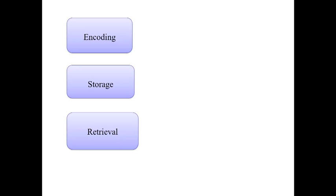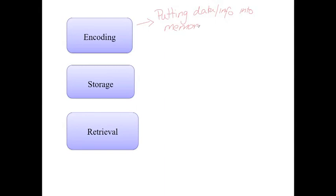We have this idea of encoding, which we looked at before. Encoding basically means putting information into memory — if we think of information as data, it has to be stored in a particular way, and it's not always the same. The second process is storage: once the information is there, it's got to be stored and maintained in memory.